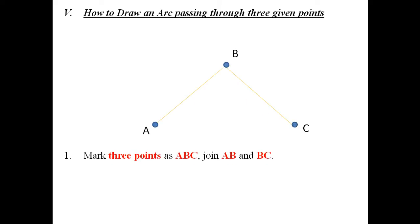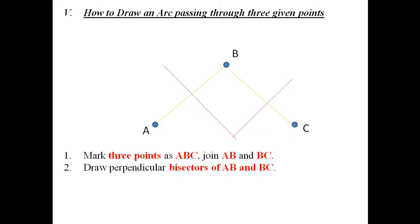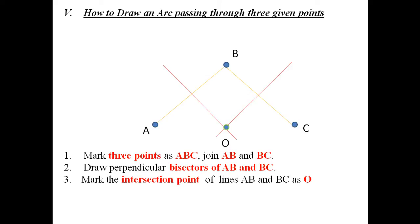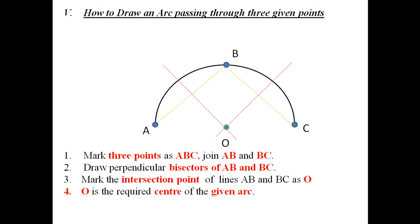The next problem is how to draw an arc passing through three given points. Mark three points A, B, and C, and join AB and BC. Bisect AB and BC. The intersection of the bisecting lines gives the center O. With O as center, draw an arc that will touch all three points. That is the way to draw an arc passing through three given points.